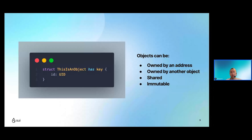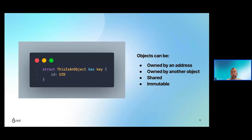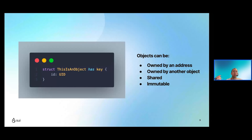Objects can also be shared — a core concept we'll get to later. A shared object is not owned by anybody; it just exists on the Sui network and anyone can freely interact with it, given that they satisfy the constraints. Finally, an immutable object cannot be changed in any way, similar to a shared object in that anyone can interact with it, but you can't write to it — the most you can do is get a read-only reference.